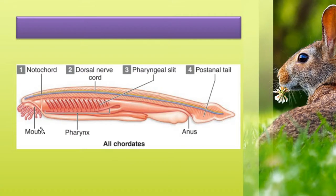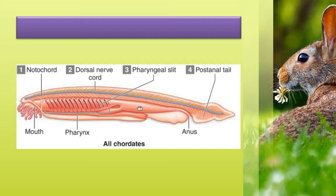All chordates possess certain common features. The first one is the presence of an elongated rod-like notochord. This gray color line in the diagram represents the notochord. It will be present throughout the lifetime of the lancet as well as lampreys. In adult vertebrates, it is partially or completely replaced by the backbone or the vertebral column.